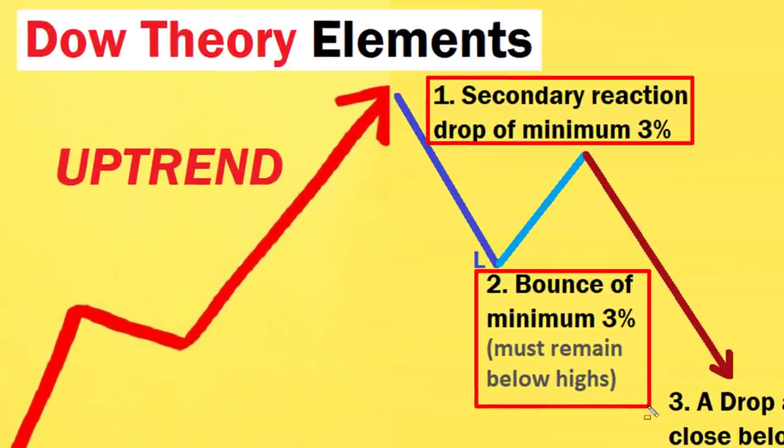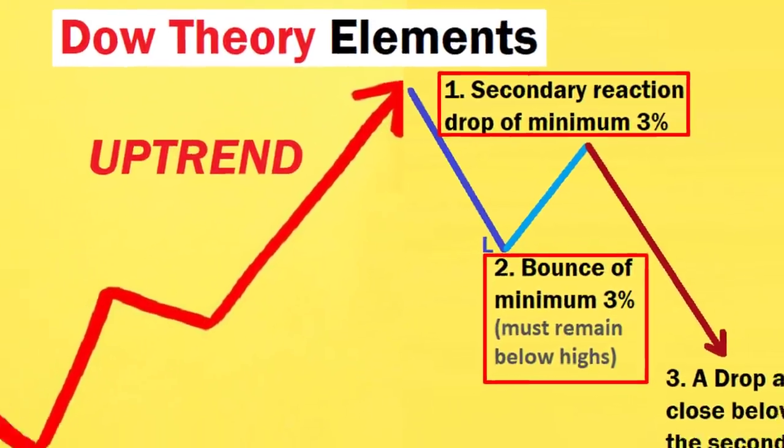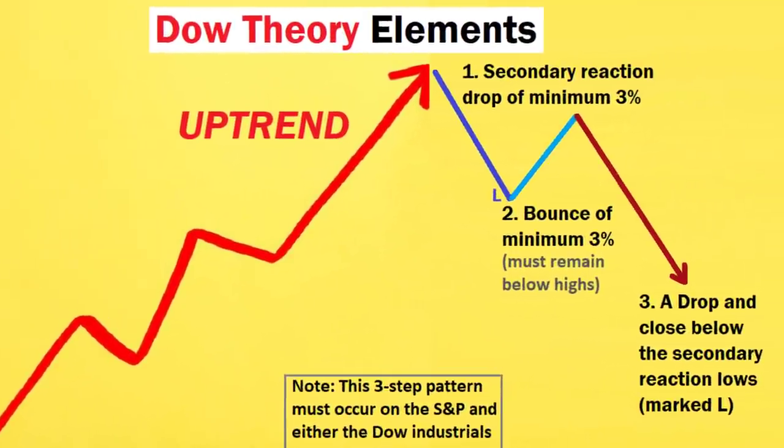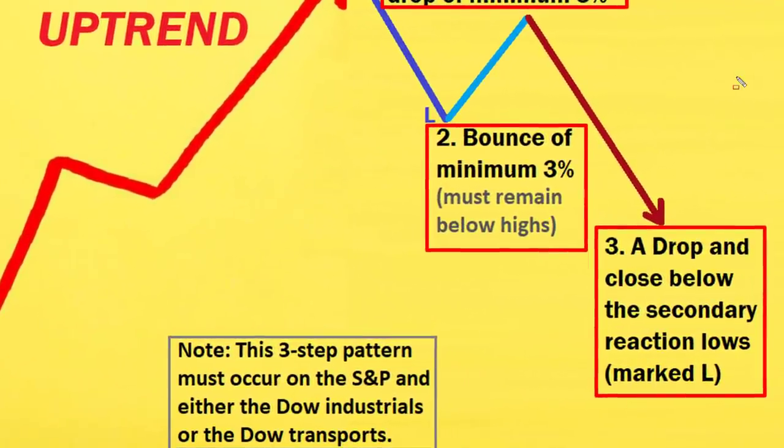So this recent rally on the S&P counts as the 3% bounce as per the Dow Theory system. To recap: secondary reaction drop on the stock market of at least 3% minimum — we actually had a 5% drop on the S&P — and then a 3% bounce. That completes two parts of the Dow Theory system. Two stages have been met, but the third requirement has not yet been met. If the S&P falls and closes below the key level of support at 4,300, that would trigger a Dow Theory sell signal — and some experts call that a Dow Theory bear market.